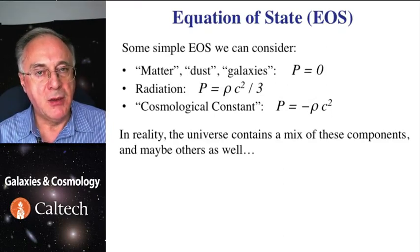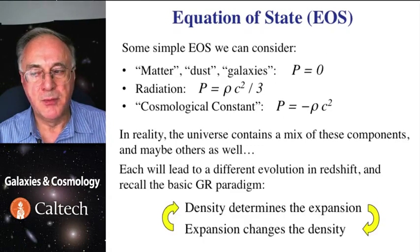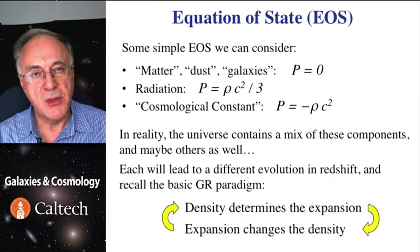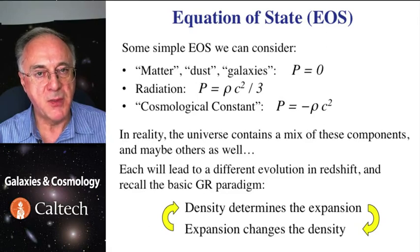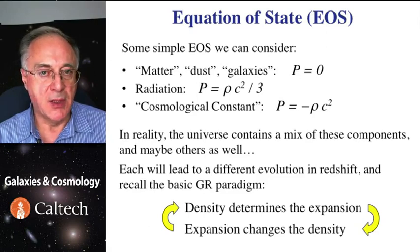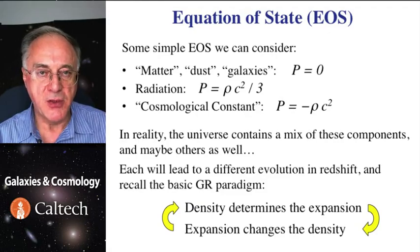So let us consider these three simple cases: matter, radiation, and cosmological constant. In reality, the universe has all three of those, plus maybe other things, and there is a mixture. So each of those will evolve in a different fashion, because each one of them implies a different behavior of density as the universe expands. And so as the universe expands, its density changes, that affects the expansion, and so on.